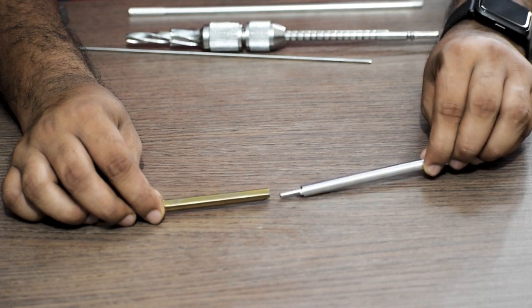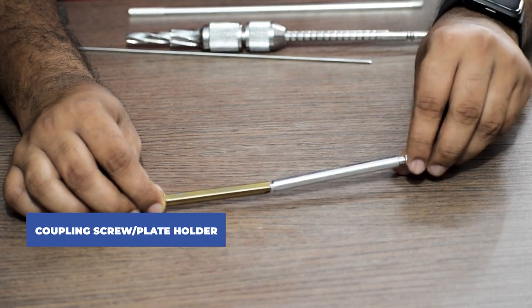After this, we remove the guide wire as well and then connect the coupling screw or the plate holder.